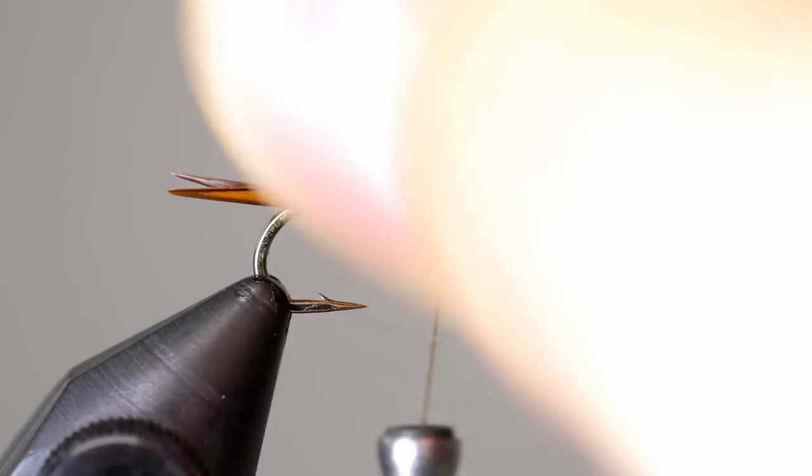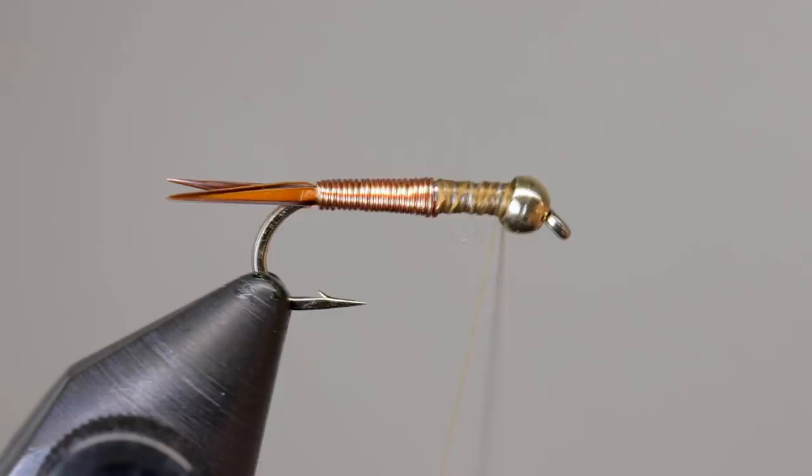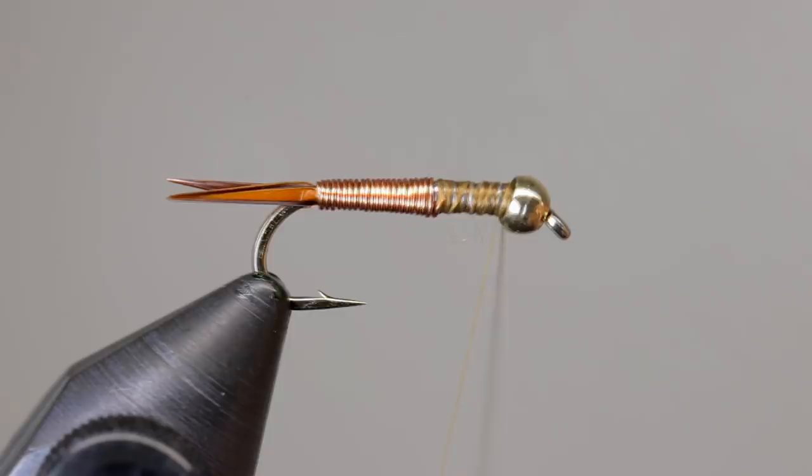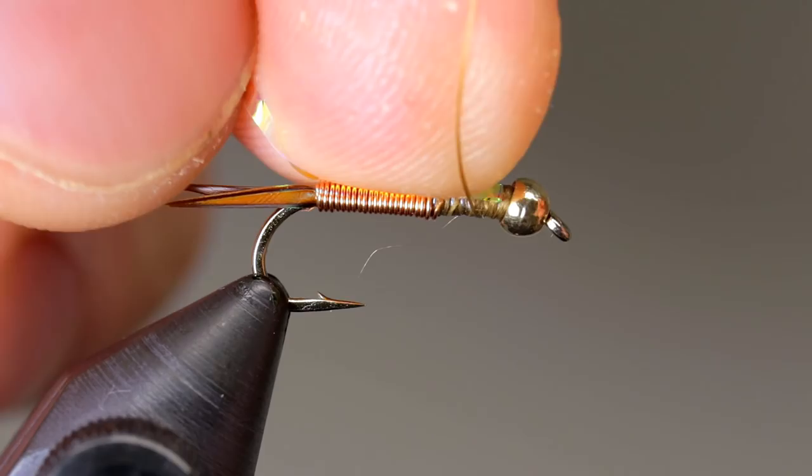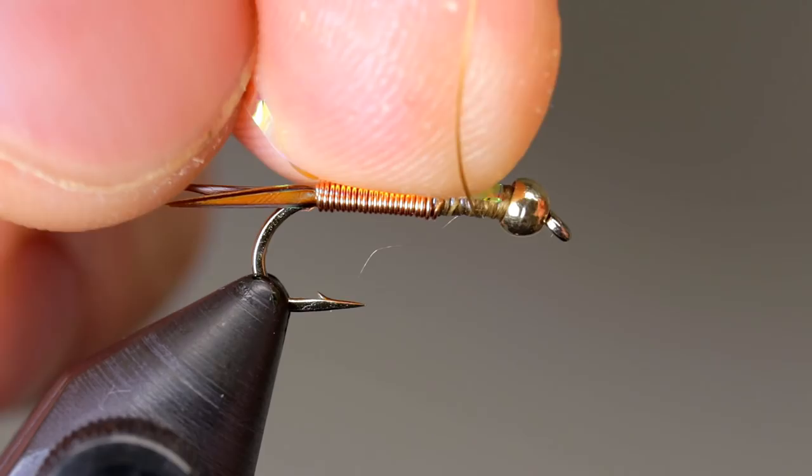Mylar tinsel is used to create the flash on the wing case. Place a single piece on top of the hook longer than you will need, and again after a couple of wraps, pull the tinsel back until you have just a small piece left. Fold this small piece back, and wrap back with your thread to cover both the long and short end of the tinsel. End with your thread at the copper wire.